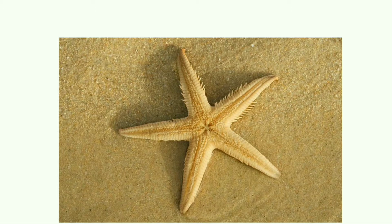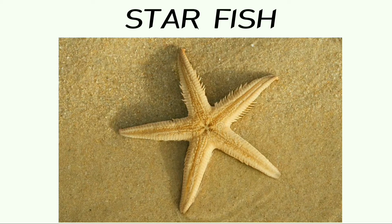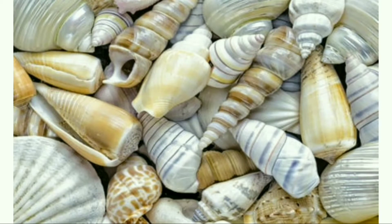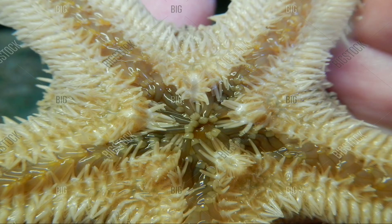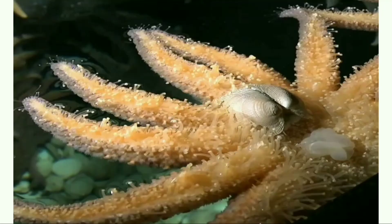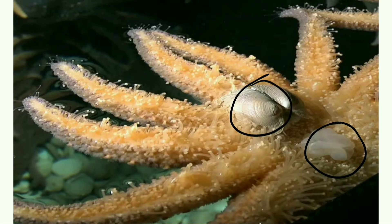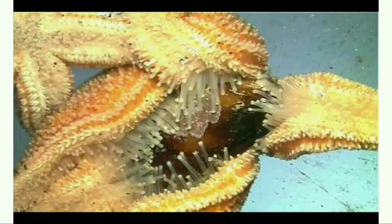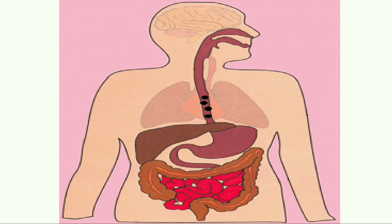Do you know what this creature is called? Yes, it's a starfish. Starfish feeds on animals covered by hard shells of calcium carbonate. The starfish has its mouth at the center — it pops out its stomach through its mouth to eat the animal inside the shell, and the stomach then goes back into the body.